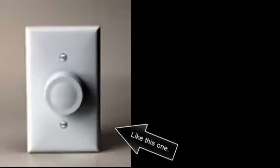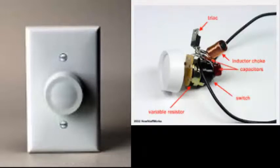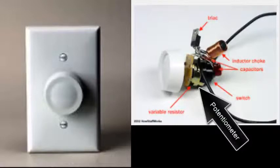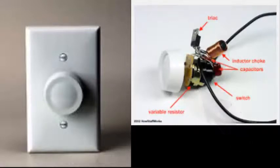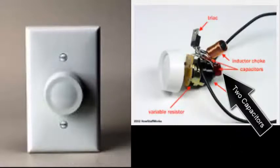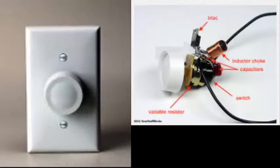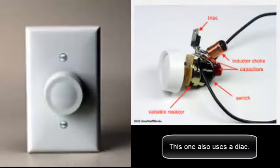TRIAC demonstrations using a commercial light dimmer like this one. It has a TRIAC, a potentiometer turned by the knob, two capacitors, an inductor. This one also uses a DIAC.